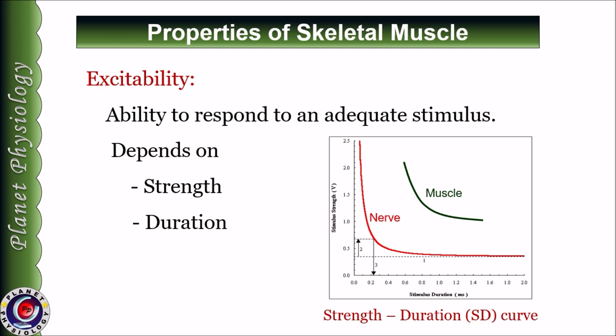Let us start with excitability. It is defined as the ability of a tissue to respond to an adequate stimulus. It depends on two factors: strength and duration of the stimulus. The relationship between the strength and duration of the stimulus is indicated in this graph. Shown in red color is the relationship for the nerve and in green color is for the skeletal muscle. This graph is called the strength-duration curve or S-D curve.